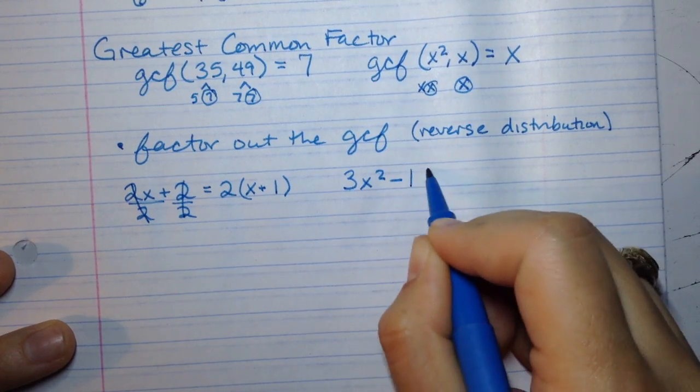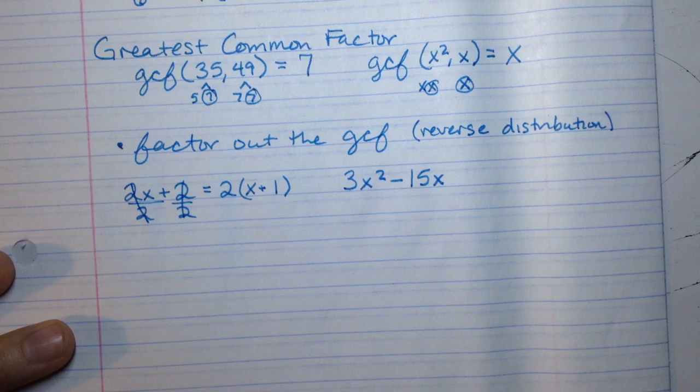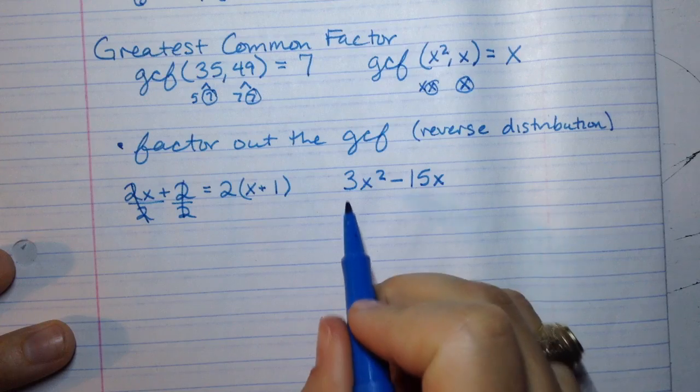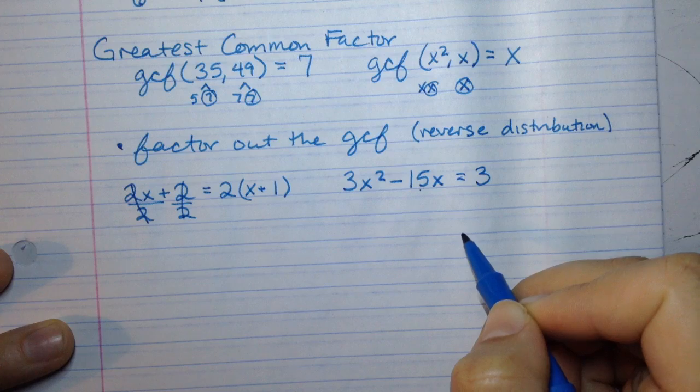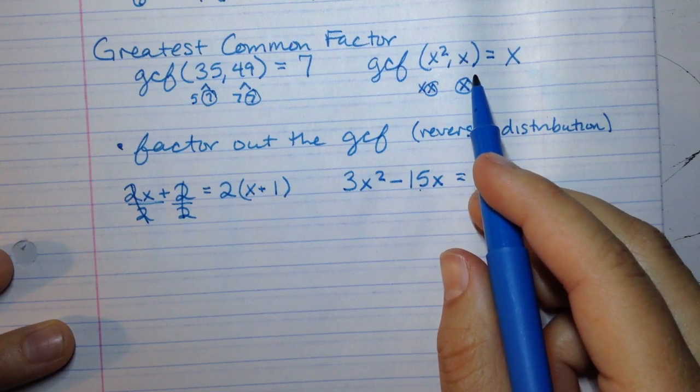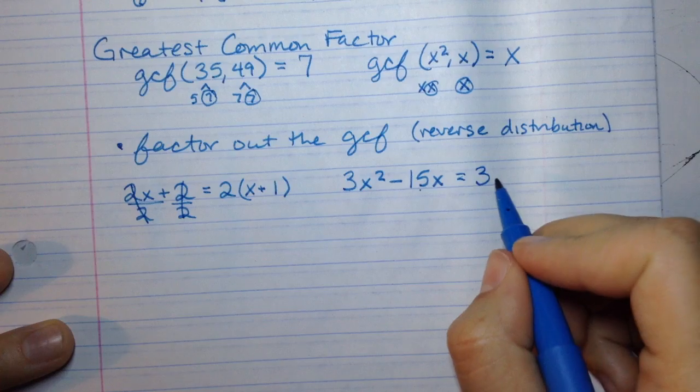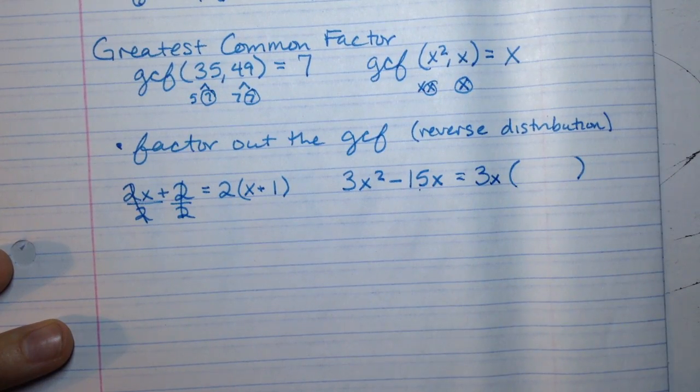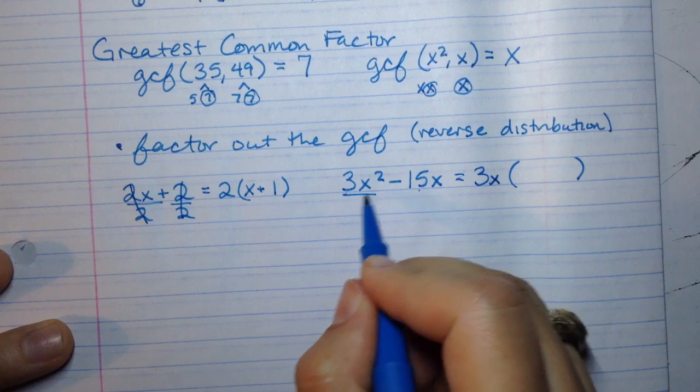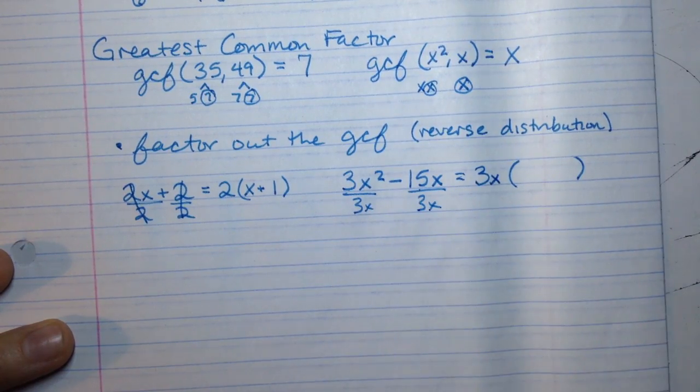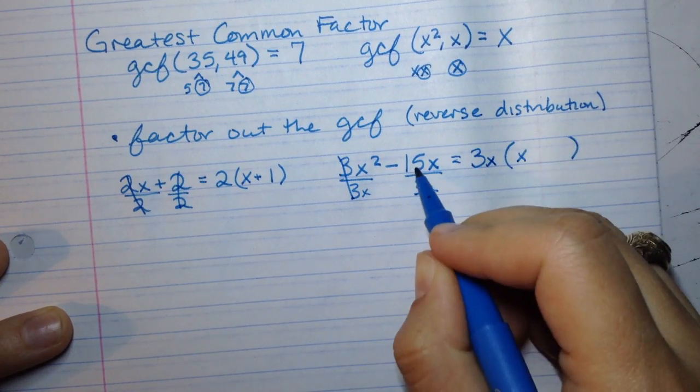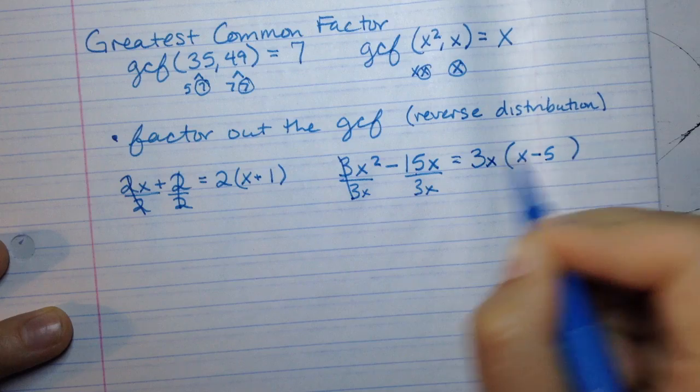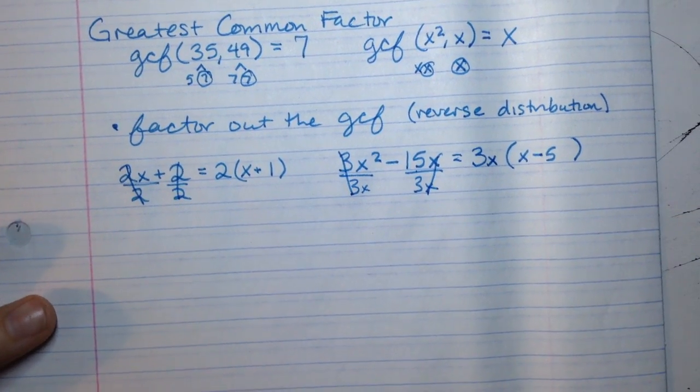If I have 3x squared and I'm subtracting 15x, I want to factor out the GCF. You'd look first at the numbers. The greatest common factor between 3 and 15 is the number 3. And then, like we did up here, the greatest common factor between x squared and x is x. Now if I factored that out, it's like I'm dividing by 3x with both of these. The 3's will cancel. x squared divided by x is x. 15 divided by 3 is 5. And x's cancel. I have factored out the GCF.